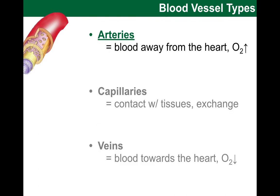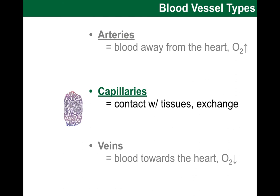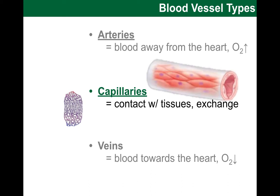Now let's look at capillaries in a little more detail. These are very small vessels — so narrow in the diameter of the lumen that only about one red blood cell can squeeze through at one time. Another important thing to note is that the walls of these vessels are made of only the tunica intima layer, so there is no media or externa in the capillaries. The small diameter and thin wall allow efficient exchange of materials from and to the blood.